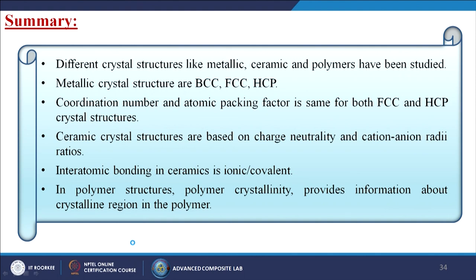In summary, this lecture discussed different crystal structures: metallic (BCC, FCC, HCP), ceramic, and polymer. We covered coordination number and atomic packing factor for these structures. Ceramic crystal structures are based on charge neutrality and cation-anion radius ratios, with interatomic bonding that is ionic, covalent, or both. Polymer crystallinity provides information about the crystalline region within a polymer. Thank you.